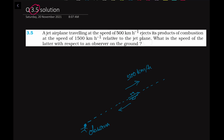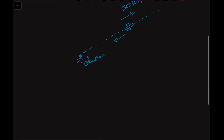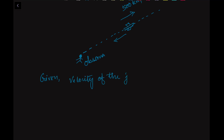So it will have a negative speed in comparison to the aeroplane. Let us write down the given values. Given: velocity of the jet, Vj, is equal to 500 km per hour. This is the given speed.